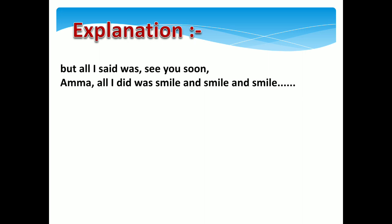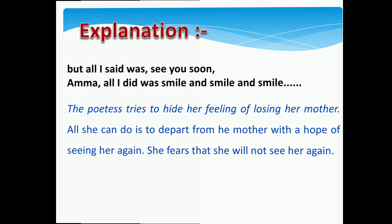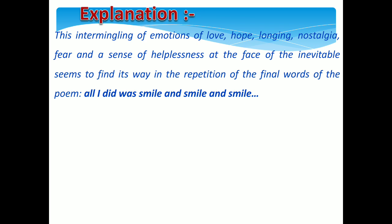The poetess says: 'But all I said was, see you soon, Amma. All I did was smile and smile and smile.' The poetess tries to hide her feeling of losing her mother. All she can do is depart from her mother with the hope of seeing her again. She fears that she will not see her mother again. The intermingling of emotions of love, hope, longing, nostalgia, fear and a sense of helplessness at the face of the inevitable seems to find its way in the repetition of the final words of the poem.